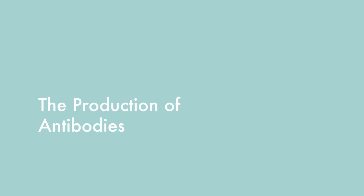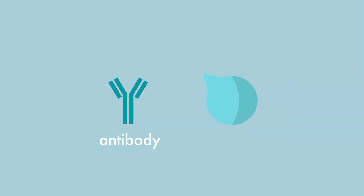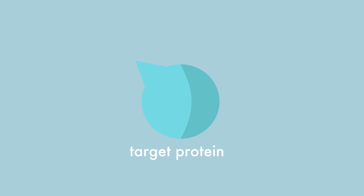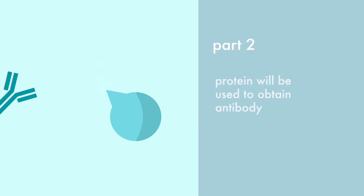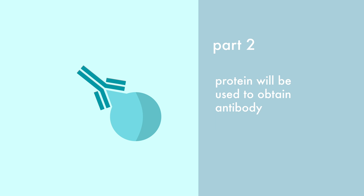The production of antibodies according to Chromalyn's pharmaceutical biotechnology. To obtain an antibody against a certain target protein, we first need to develop the target protein. In Part 1 of this video, we will explain how you can acquire the target protein for your antibody through recombinant technology. In Part 2, the recombinant target protein will be utilized to obtain the wanted antibody.